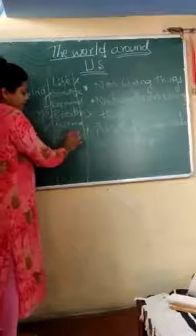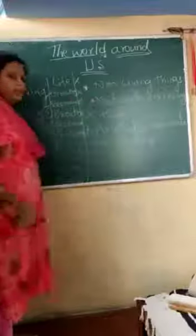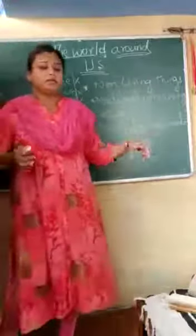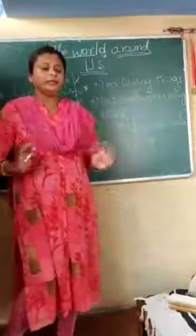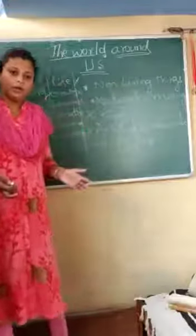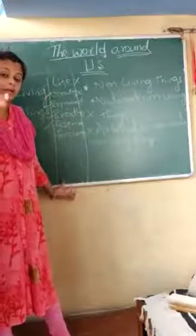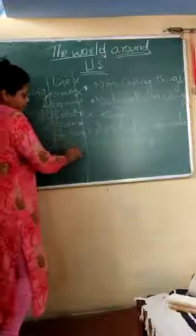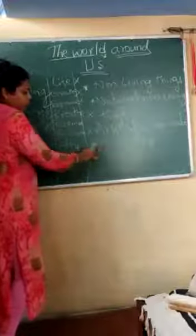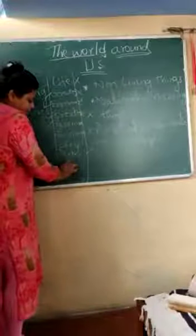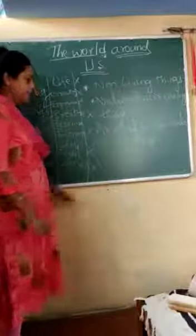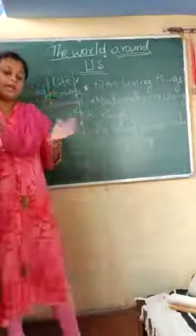All living things respond to changes — changes in nature, in the surrounding, or in the climate. But for non-living things, it doesn't matter whatever the climate or atmosphere changes — they do not respond. Living things also have life and death, and a life cycle. Non-living things have neither life nor death, and there is no life cycle for them.